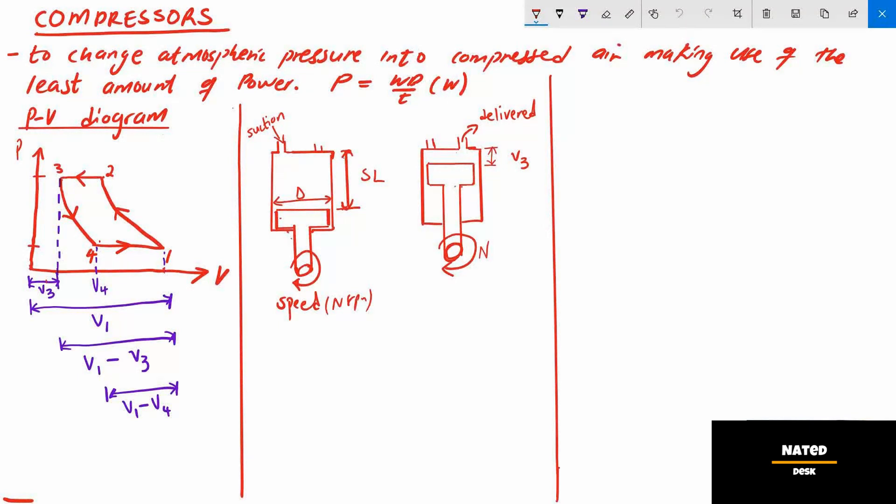Formula for power P is equal to work done per seconds. We will first consider the work done as area 1, 2, 3, 4 on the PV diagram as shown here.